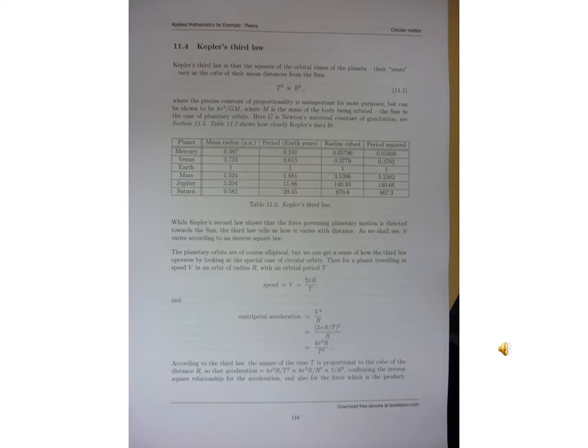So in this case, R is the distance radius, and T is the time. So V is equal to 2 pi R divided by T. The centripetal circular motion can also be calculated V squared divided by R.